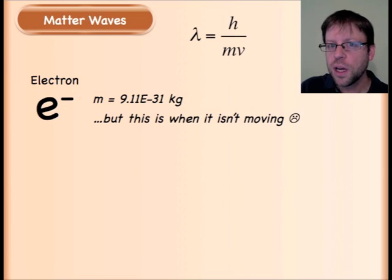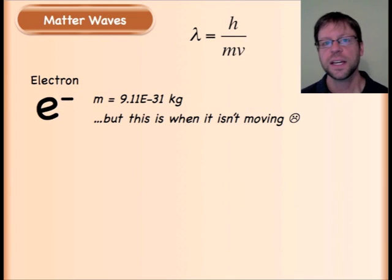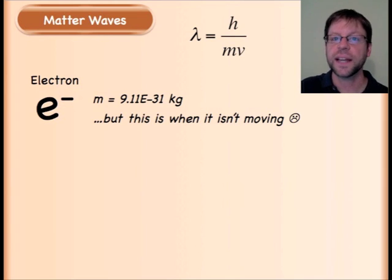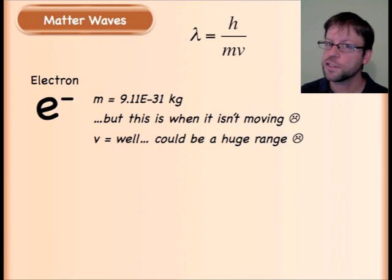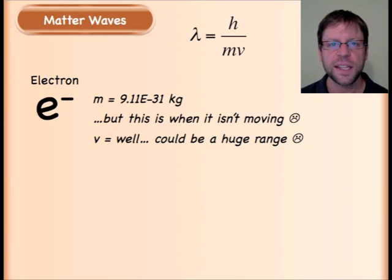And what's interesting is the electron could have different masses because the electrons are fully capable of traveling very, very fast. Again, we're going to stay away from the relativity stuff at this particular moment.